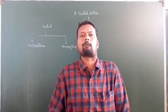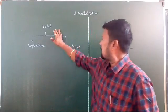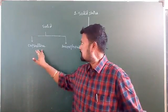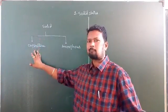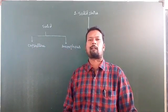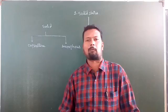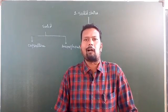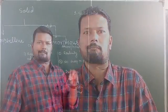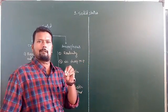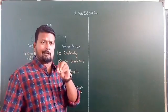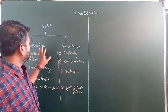The second type is amorphous solid. So solids are of two types: crystalline and amorphous. We have some characteristics of each. Solids generally have strong intermolecular forces of attraction and are classified into these two types.